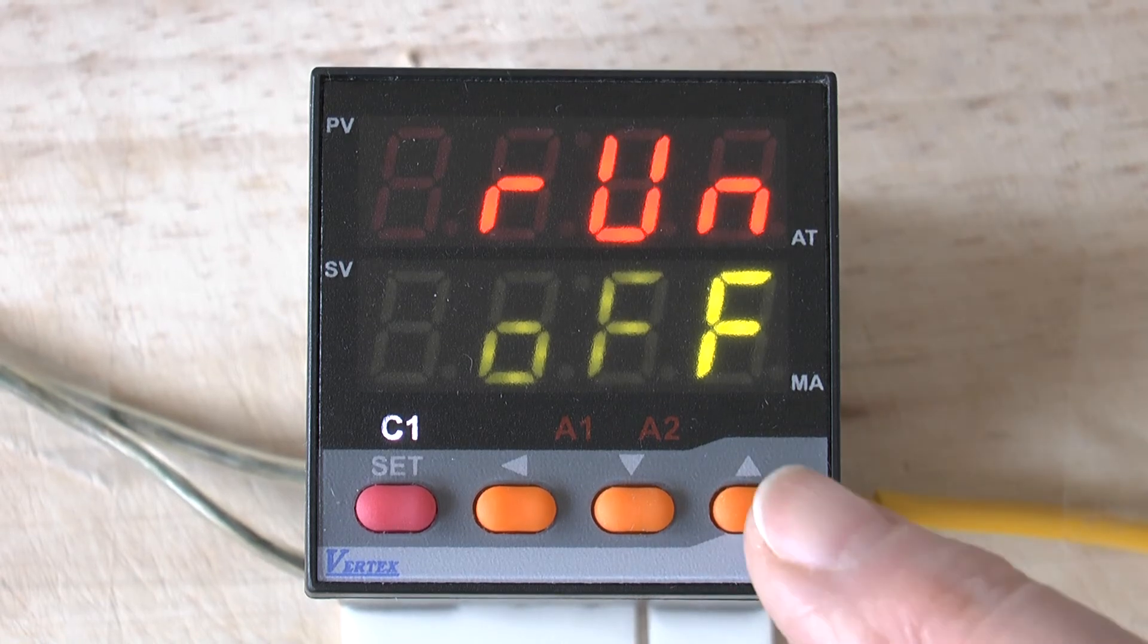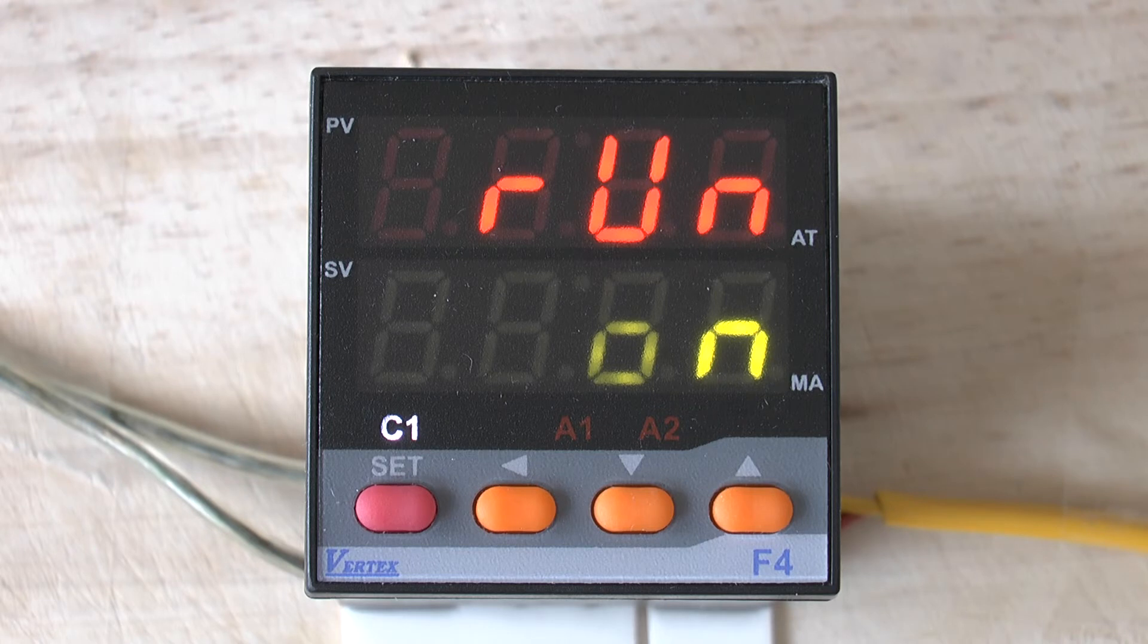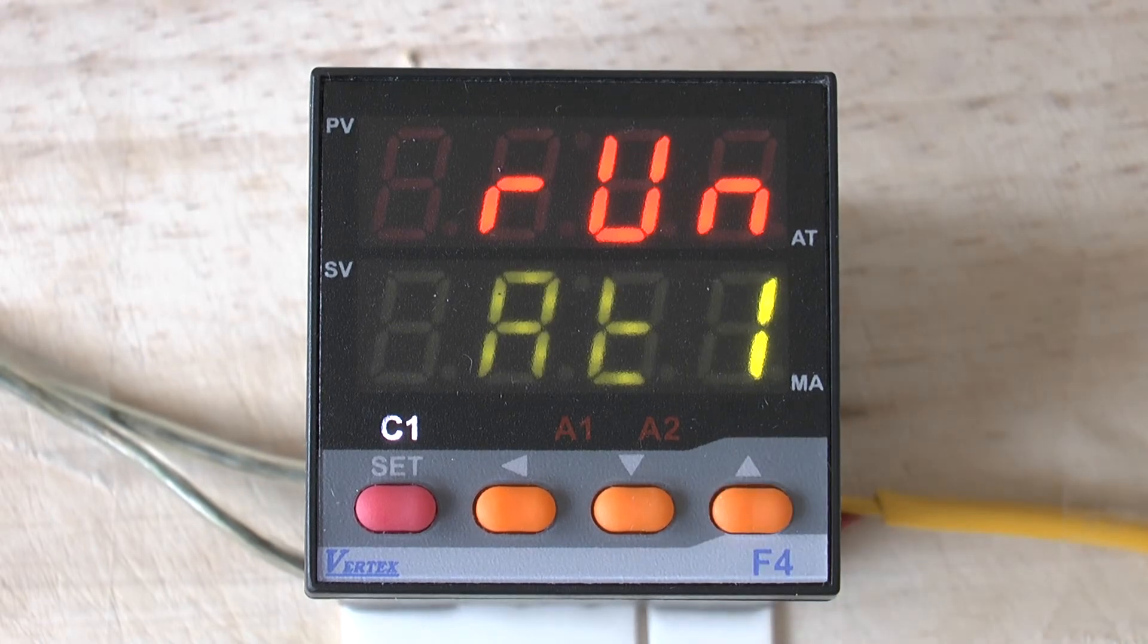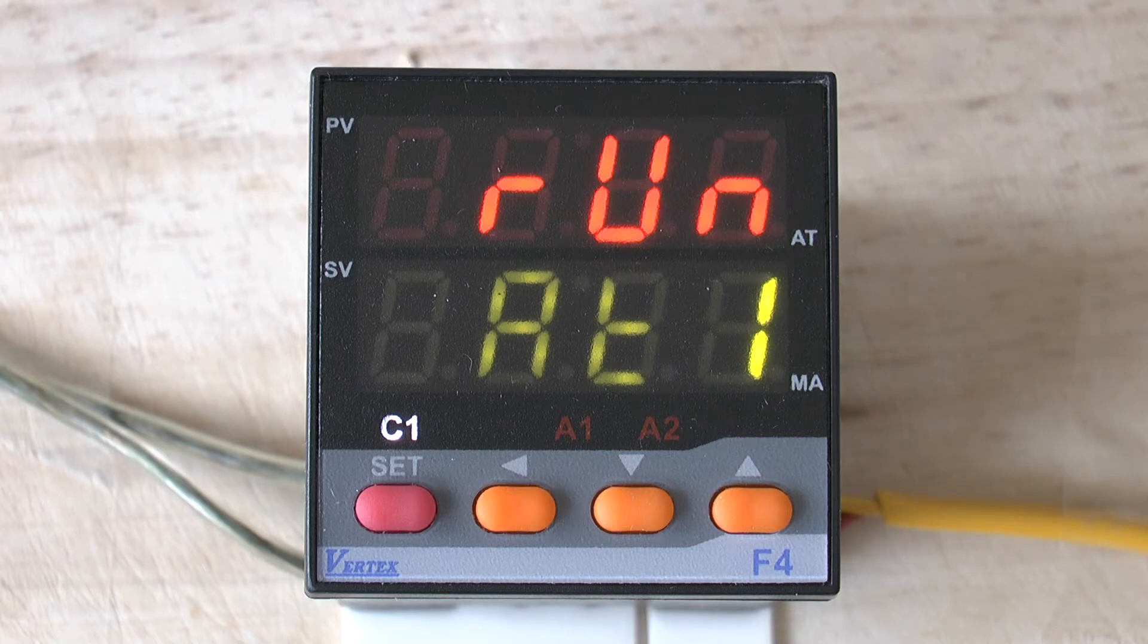If you press the UP button once, you get back to the RUN being ON. If you push the UP button once more, the next parameter is the AT1 parameter. This is the AUTOTUNING mode 1. With this parameter, the AUTOTUNE function will be performed at the setpoint.